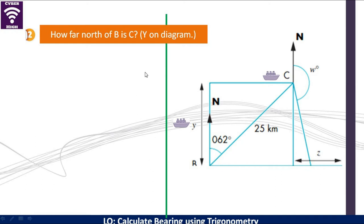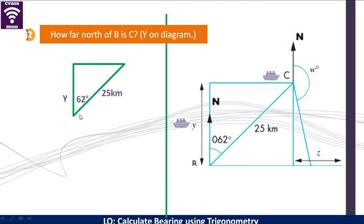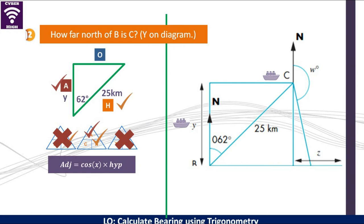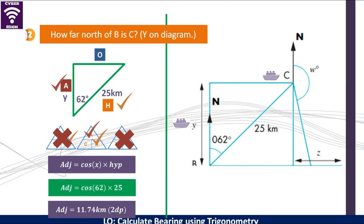How far north of B is C? We mark on our diagram the elements we are going to need — we highlight this: 62 degrees here and 25 that way. This is the adjacent side because it is next to the angle that you have been given. We tick what we have been given and we want the adjacent, which is A. So it is the cosine ratio we are using in this scenario. Cosine says adjacent is equal to cosine of x multiplied by the hypotenuse. We substitute and we get 11.74 kilometers.